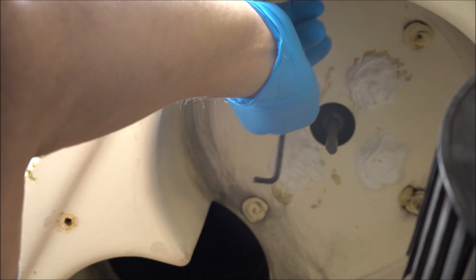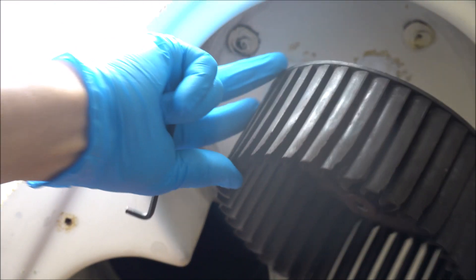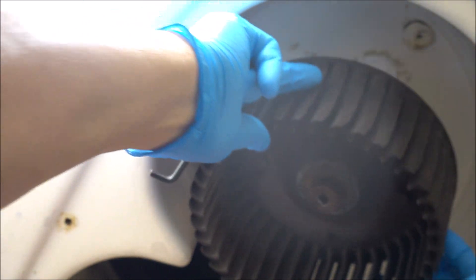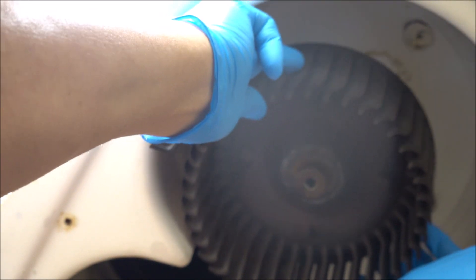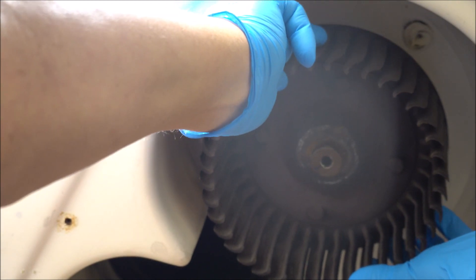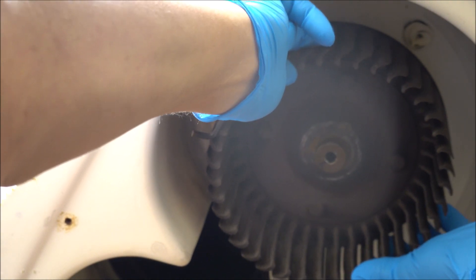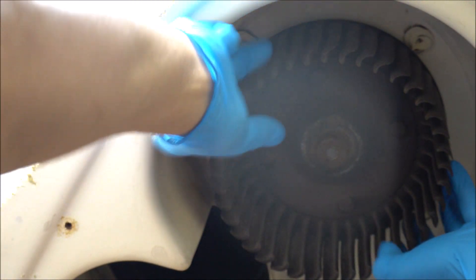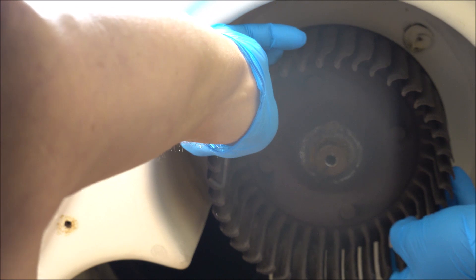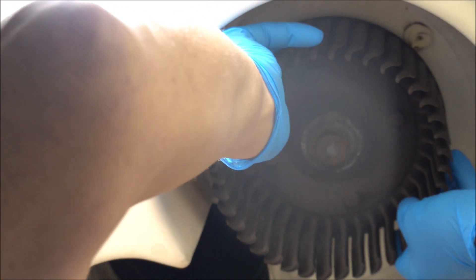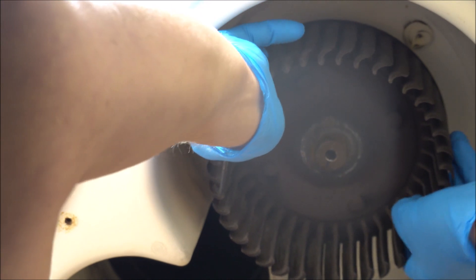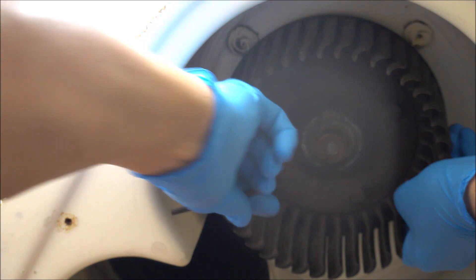Our sealant has cured a little bit here so what I'm going to do is slip our bucket wheel onto the shaft here. Just like that. That's not quite lined up just right. There it is, perfect. Now we'll tighten this up.